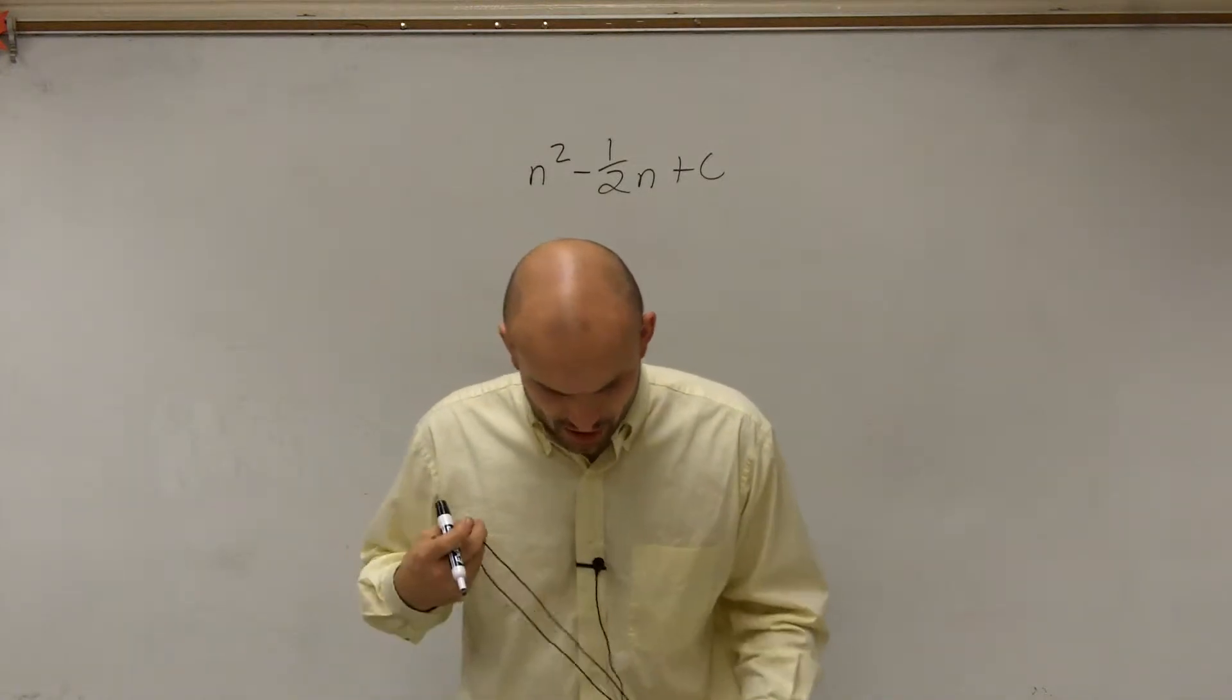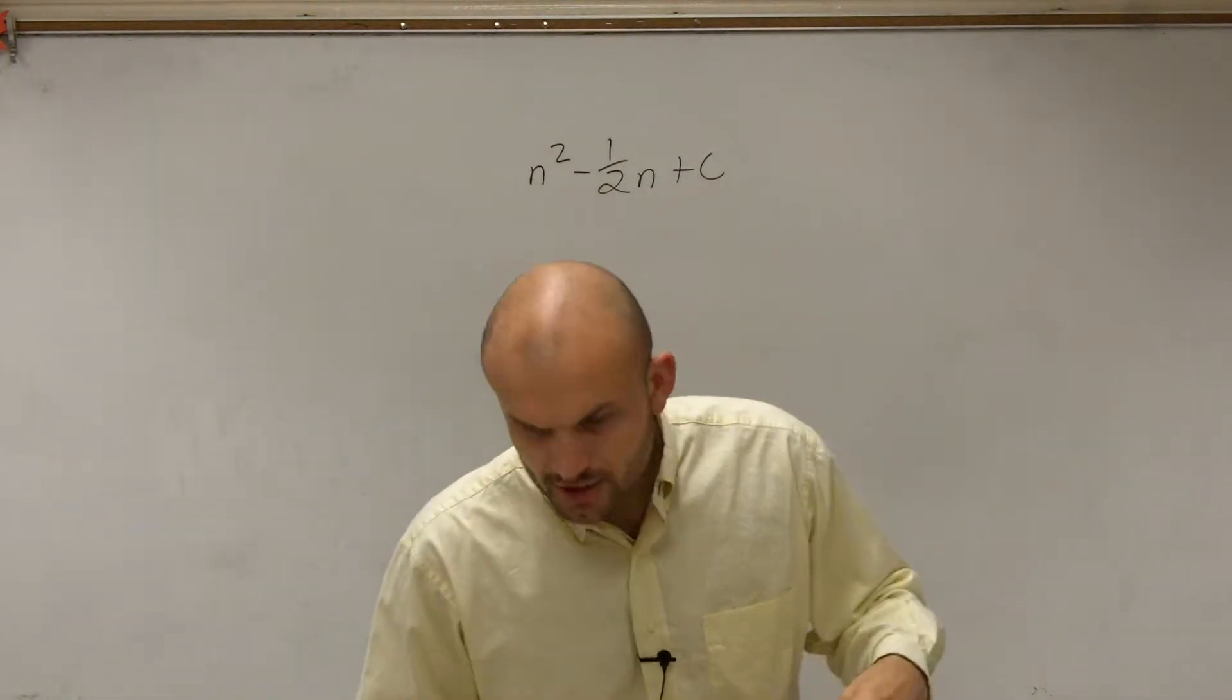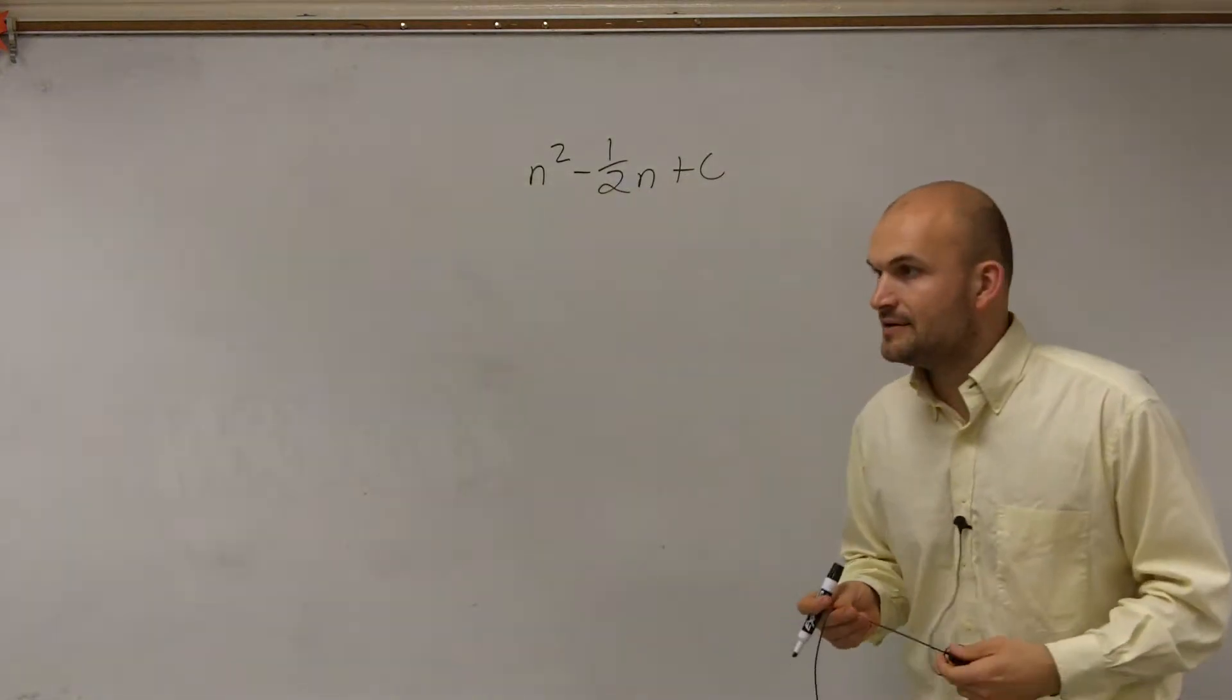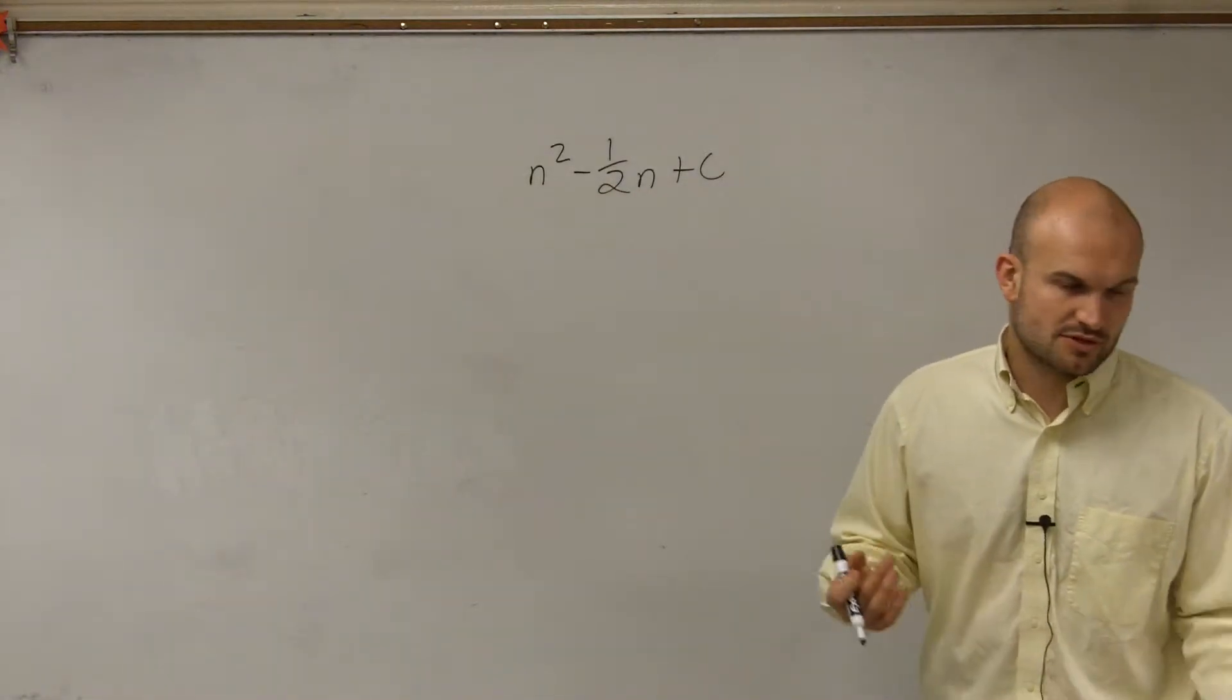So the problem first asks, this is what we're going to call kind of part one of these type problems. The problem asks, find the value of c that is going to help us complete the square, give us a perfect square.